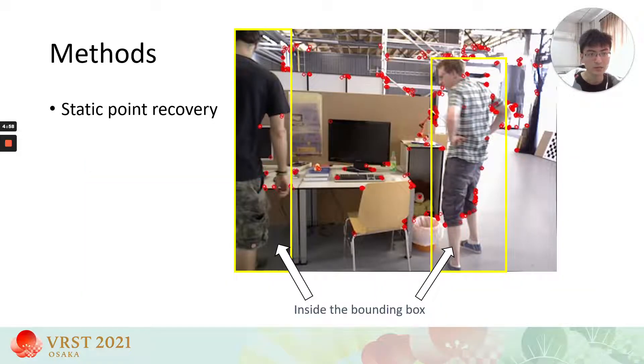The feature points outside the bounding box are all static points. The feature points inside the bounding box could be either static or dynamic points. We want to keep the static points that are inside the bounding box from being removed.